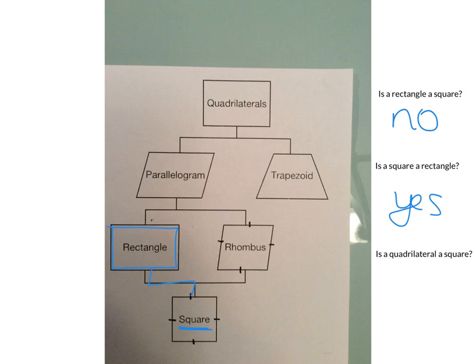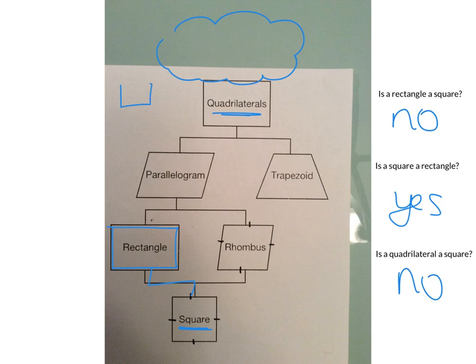Is a quadrilateral a square? No — the quadrilateral does not fall underneath the square on the family tree. If I asked you to draw a quadrilateral, you might draw a square, but you might draw something else entirely — and that shape is still a quadrilateral but not a square. So a quadrilateral is not always a square.